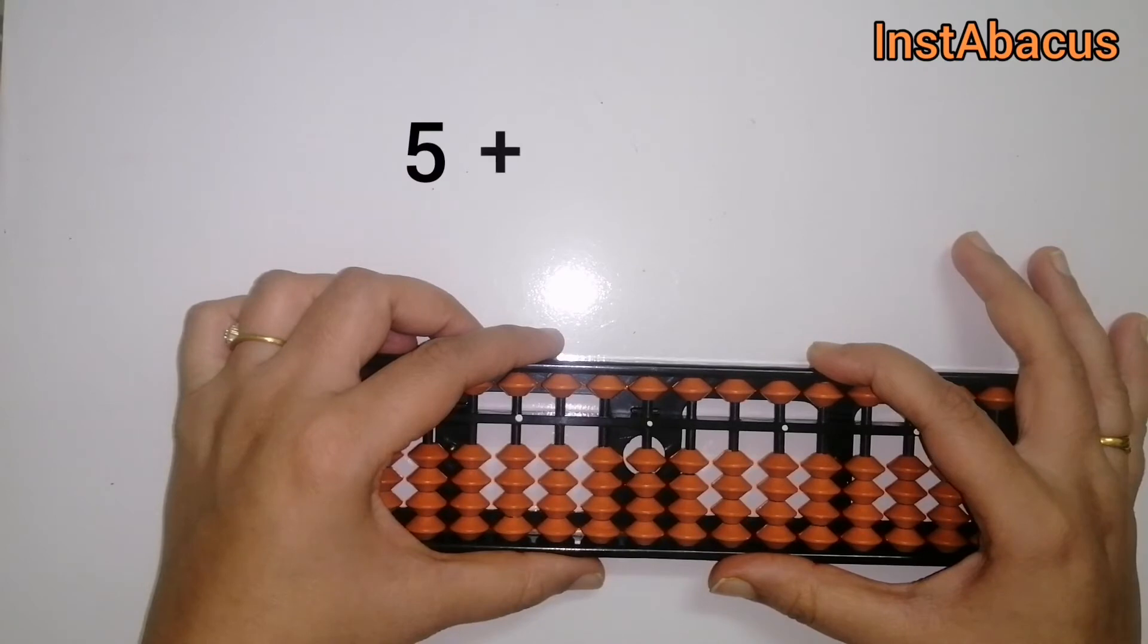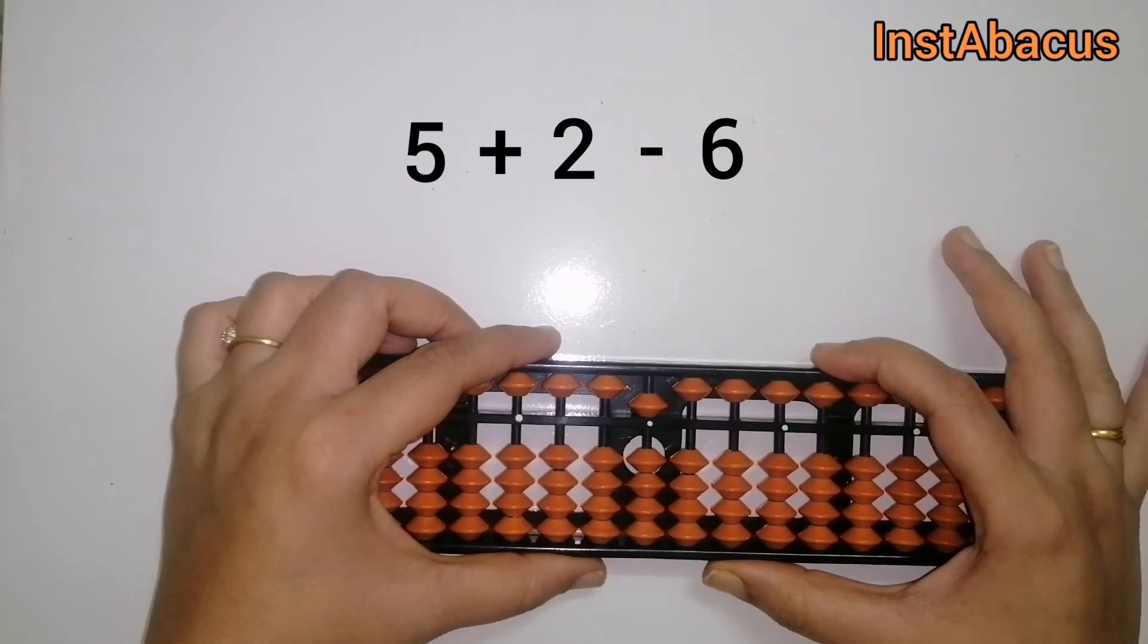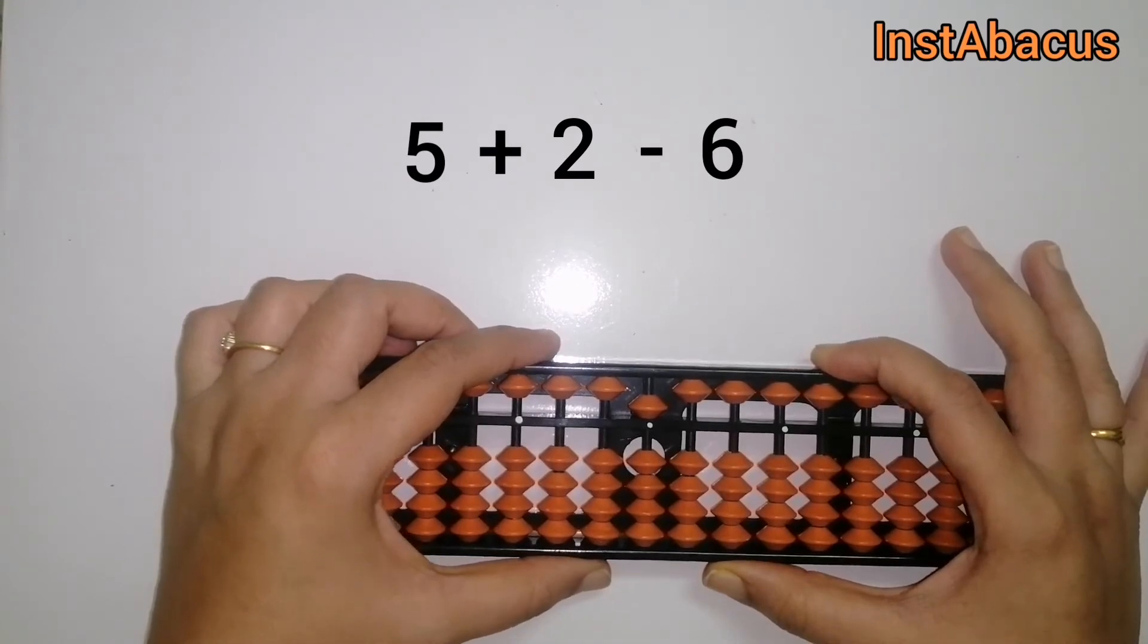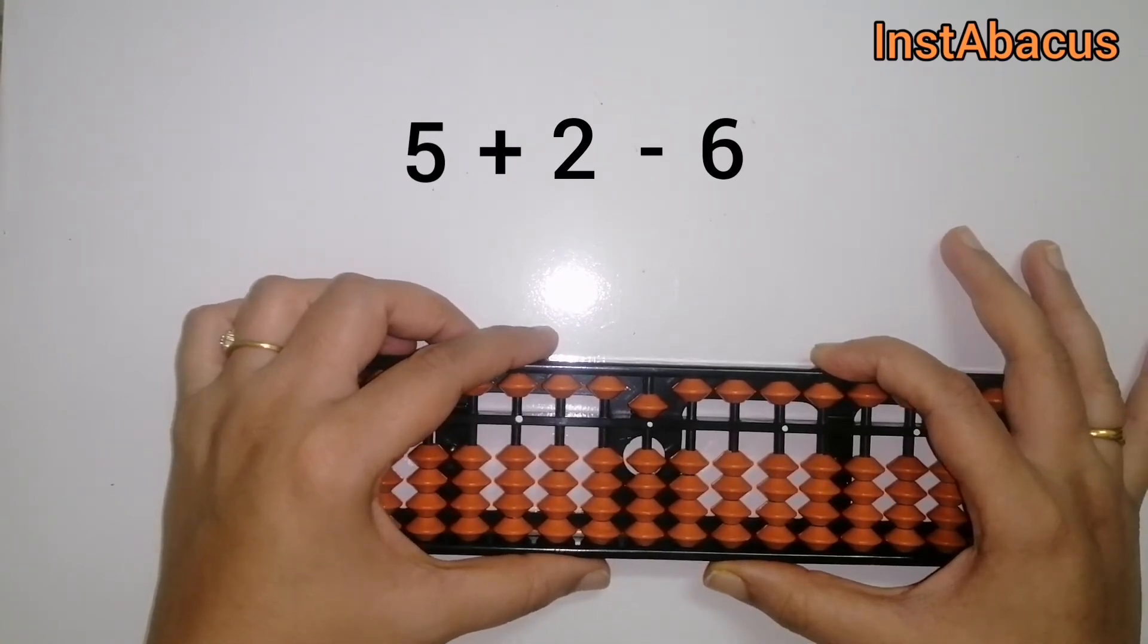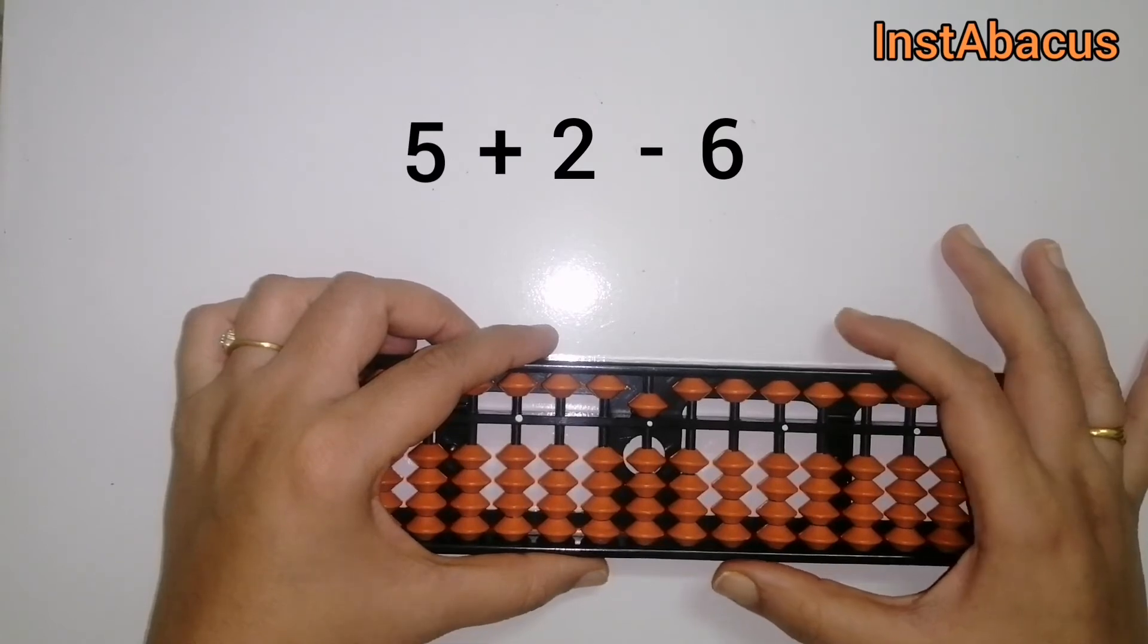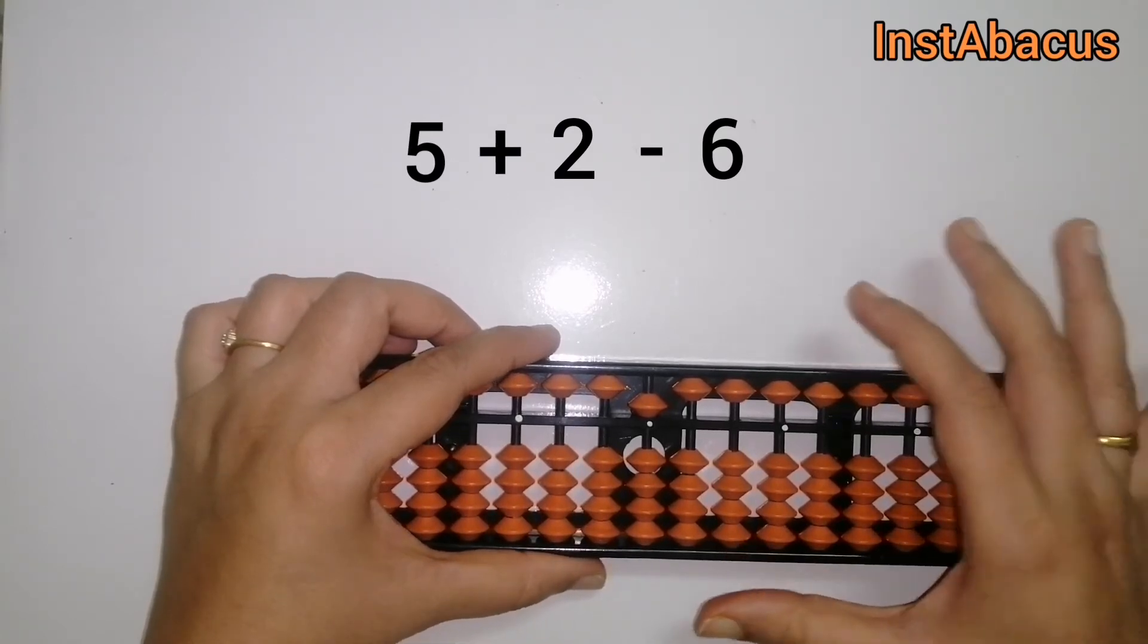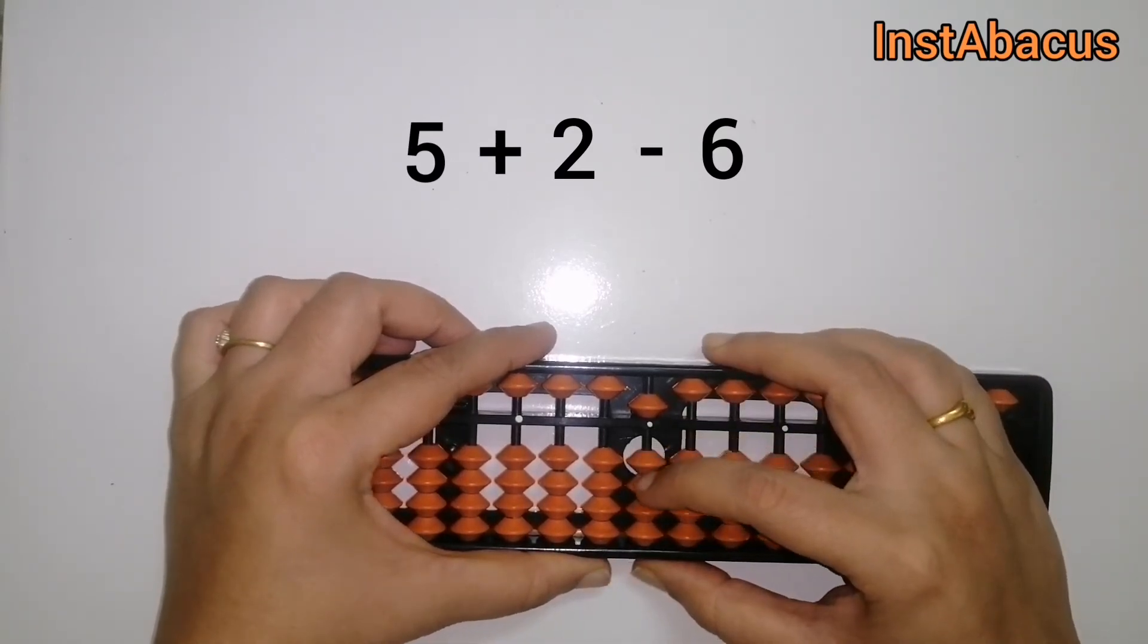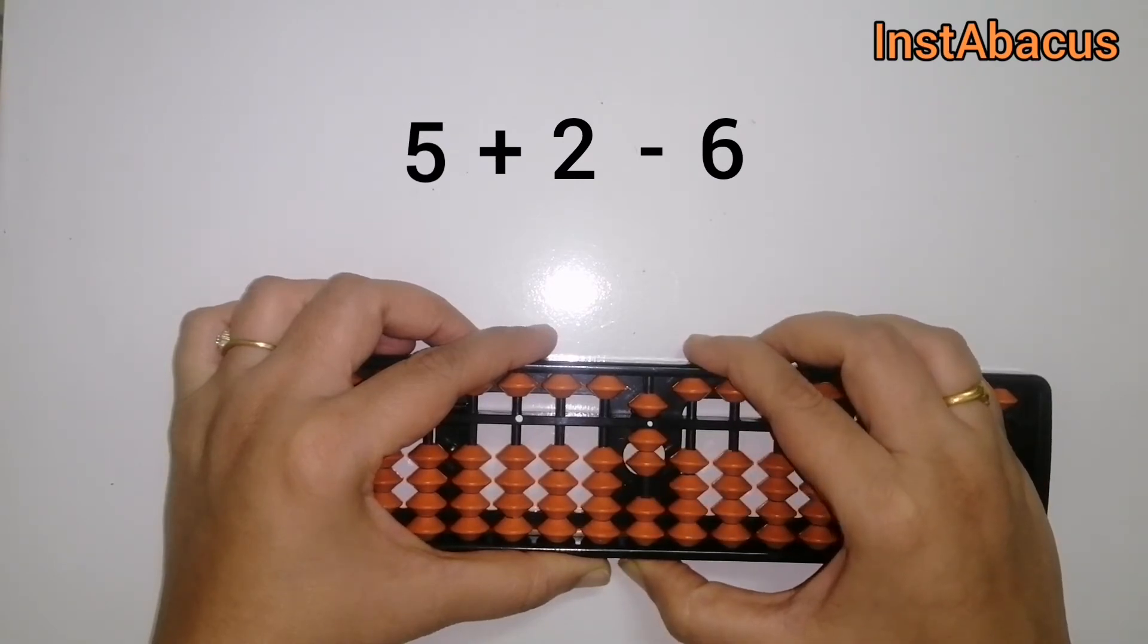Next, 5 plus 2 minus 6. Okay, so this is 5 on our abacus and now to this we are going to add 2 by moving 2 earthly bits up. Here we go, 5 plus 2.